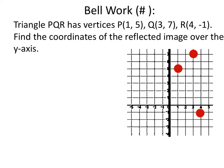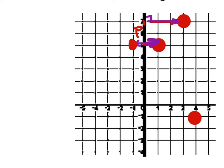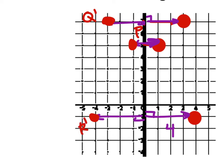We don't have to draw the lines in here because sometimes it makes things a little confusing. All we're going to do is look at the points. P is one unit away from the line of reflection at 90 degrees, so we reflect it one unit the other way to get P prime. Q is three units away, so we go three units in the other direction to find Q prime. R is four units away, so we go four units the other way to get R prime.